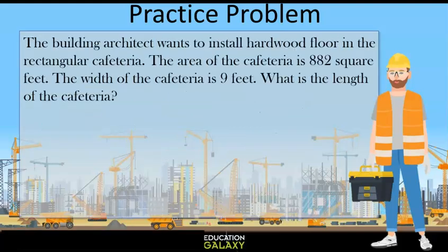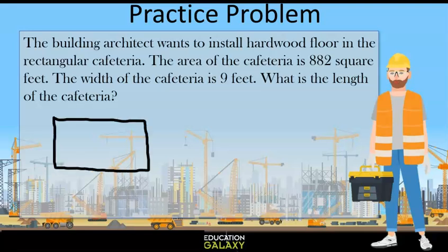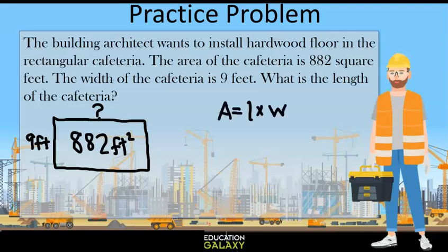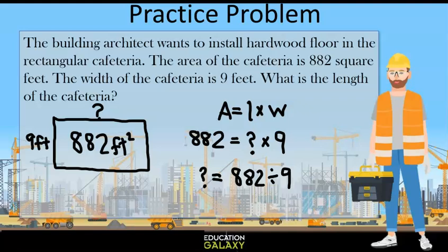Let's try another. The building architect wants to install hardwood floors in the rectangular cafeteria. The area of the cafeteria is 882 square feet. The width of the cafeteria is 9 feet. What is the length of the cafeteria? First, let's draw a diagram. We know area is length times width. That means 882 equals, well we don't know the length, we'll put a question mark. But we know the width is 9. To solve this, we can use a related math fact and solve for the question mark. 882 divided by 9, that gives us 98. So our answer is 98 feet.